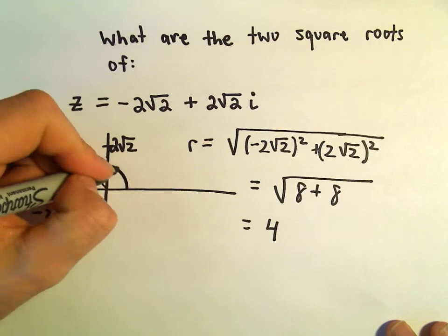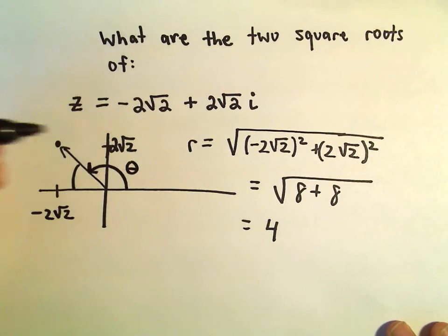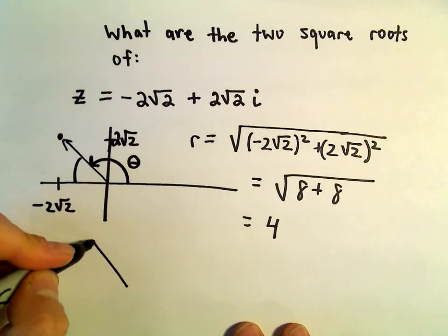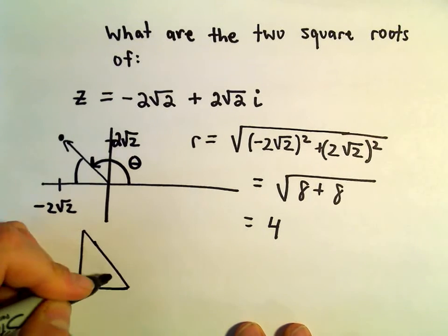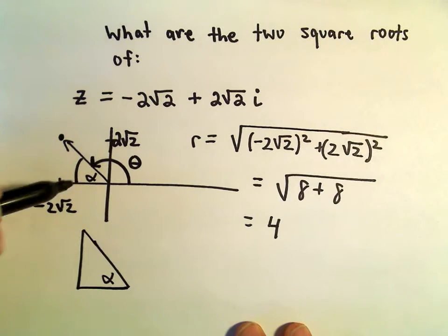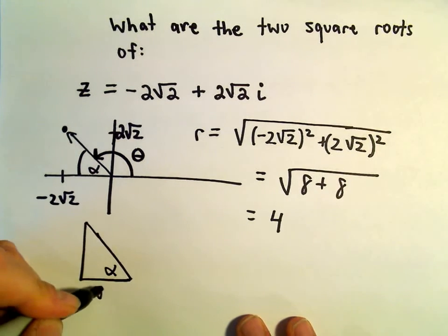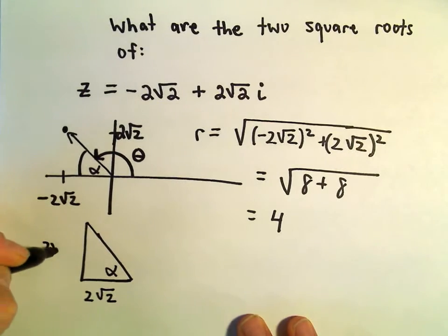We also need to figure out the angle associated with our complex number here. But instead what I'm going to do is, I'm just going to figure out the angle, we'll call it alpha. So again, we went to the left 2√2, we went up 2√2.